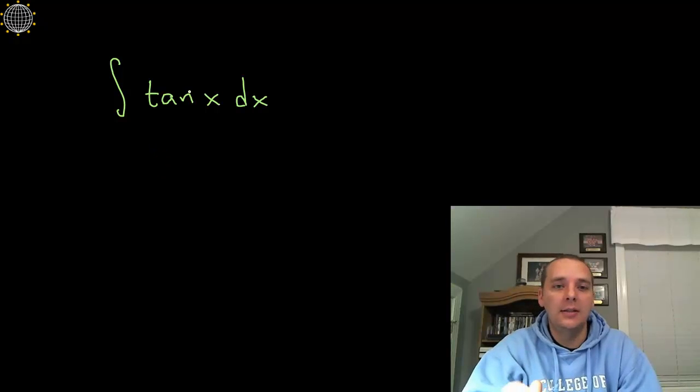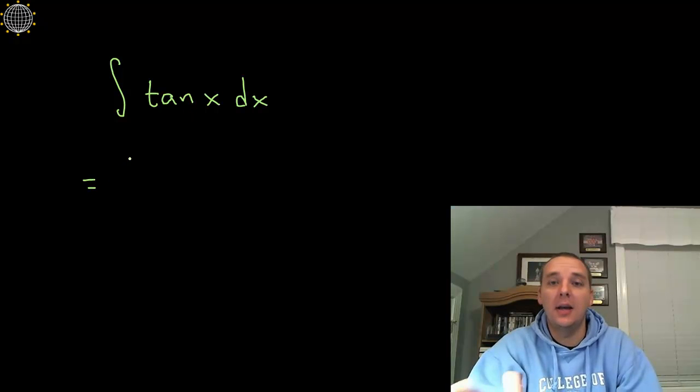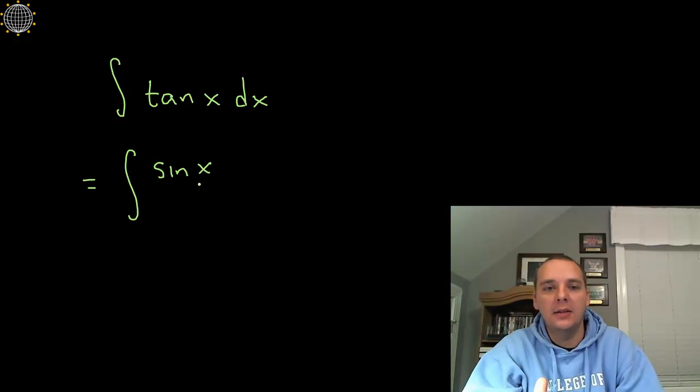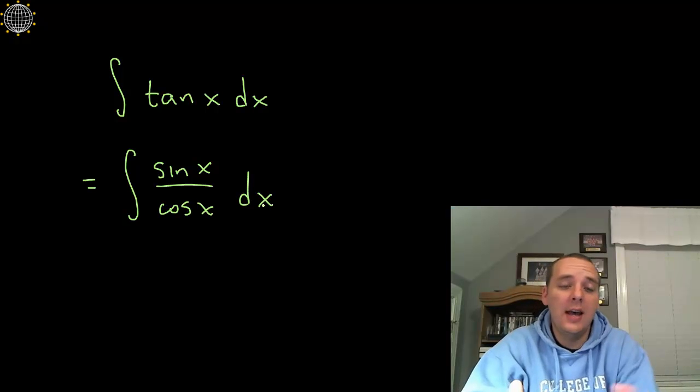So with that little hint, let's think okay, how can I rewrite tangent? Well, the only thing I can immediately think of is I know that tangent is sine over cosine. So we'll have sine x divided by cosine x dx.